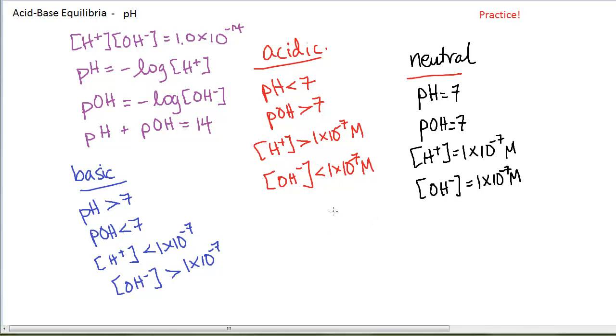One last way of looking at it, and then of course you're going to practice, is if you are given the OH minus, you can calculate the H plus by using the equation H plus times OH minus equals 10 to the minus 14. I'll just write it like this to abbreviate it.